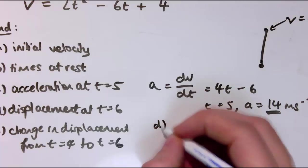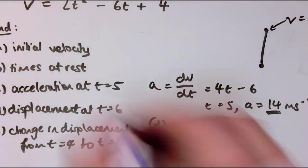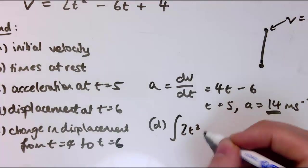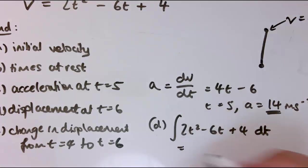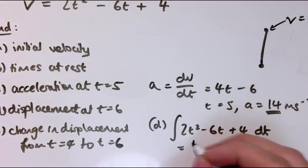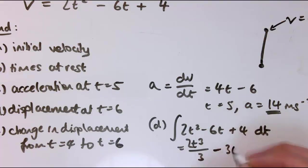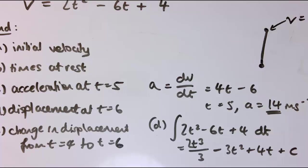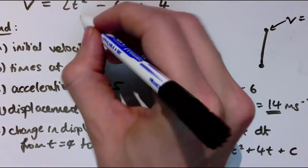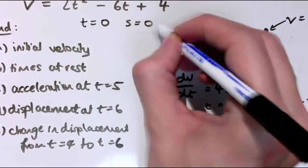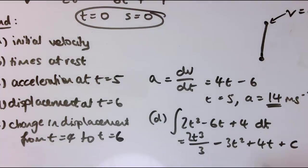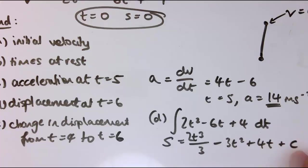For the displacement at t = 6, I need to integrate the velocity with respect to time: integrating 2t² − 6t + 4 gives 2t³/3 − 3t² + 4t + c. We need extra information to find c; given that s = 0 when t = 0, substituting gives c = 0. That's a nice condition because it means I don't have to worry about the constant.